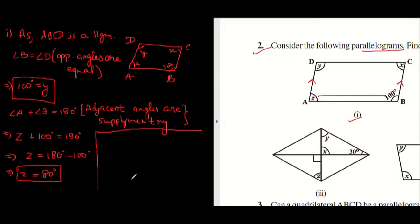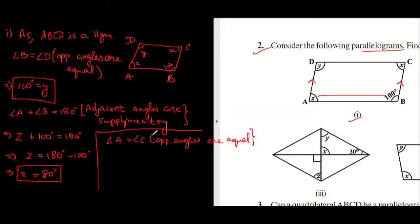Now, angle A equals angle C — opposite angles are equal. Angle A is Z, and Z is 80 degrees. Angle C is X. So hence the value of X is 80 degrees. We got all three answers.